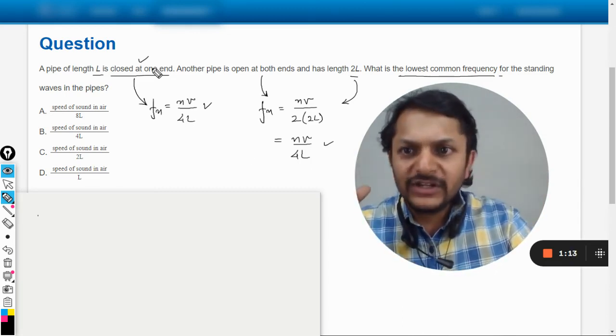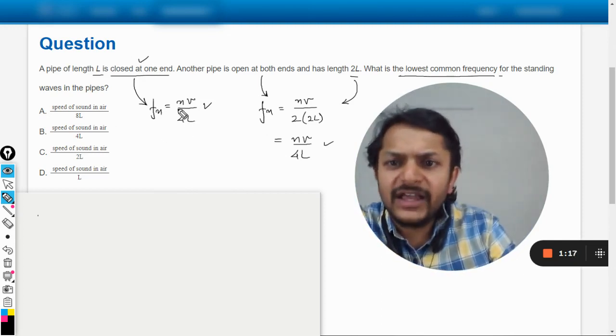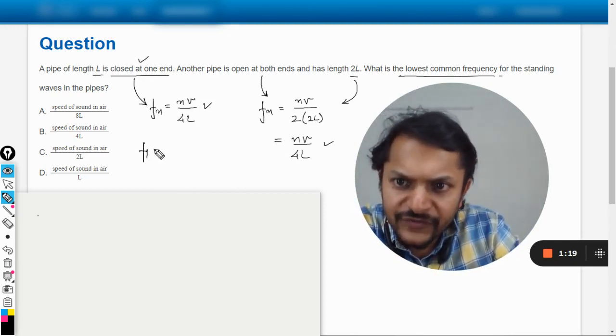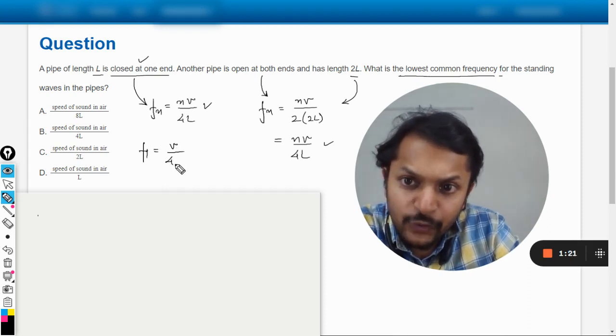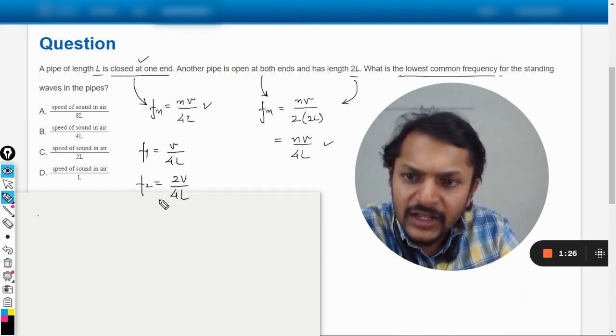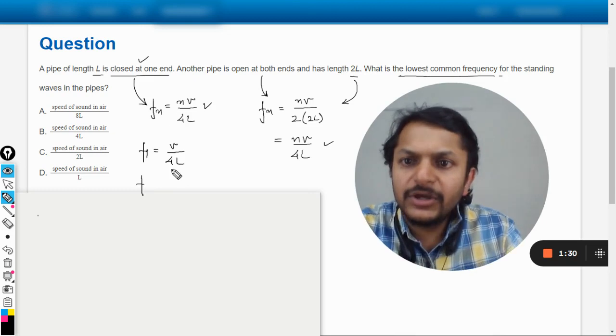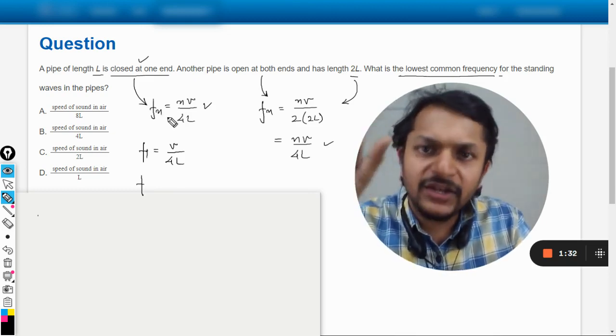1, so the first frequency here will be V/(4L). What will be the second frequency? Will it be 2V/(4L)? No, sorry, because it is closed at one end and open at the other, there are no even harmonics for this. So it will be only the third harmonic: 3V/(4L).